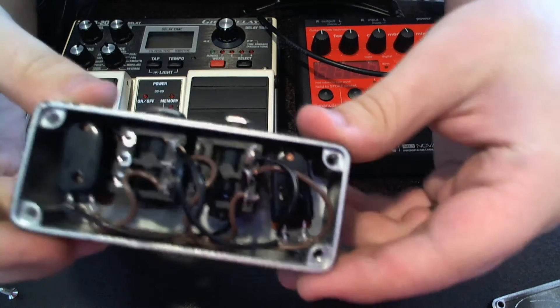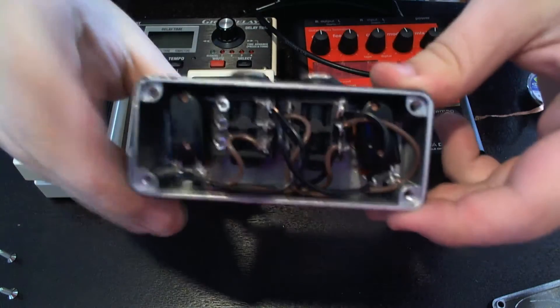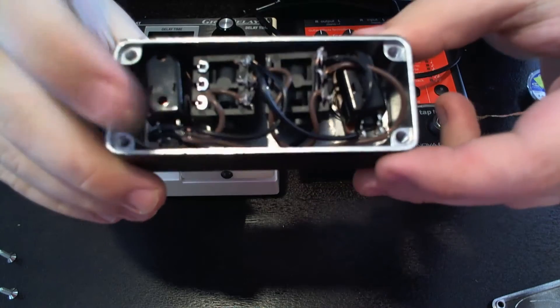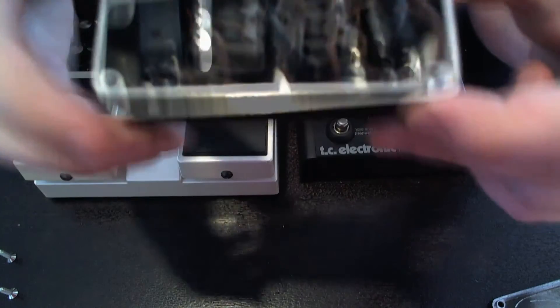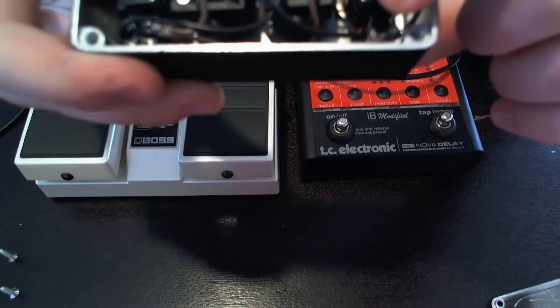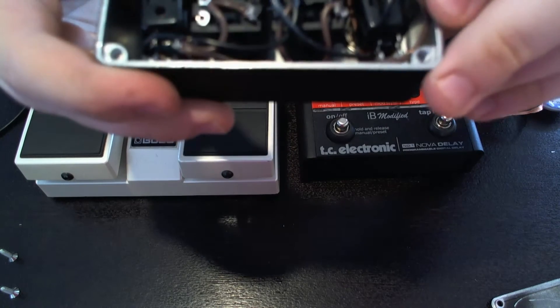So in here we have the finished up components, so we have the tap tempo switch which is connected to both the sleeve and the tip of both of these outputs. And we have the preset selector which is connected to both the ring and the sleeve of both of the outputs.